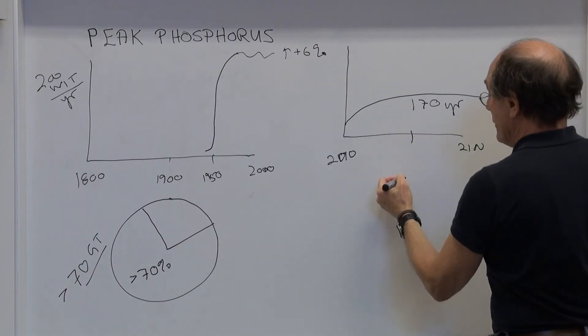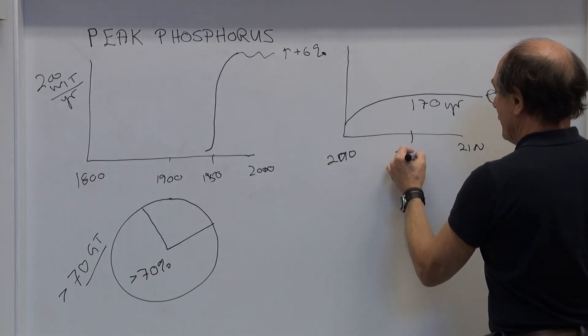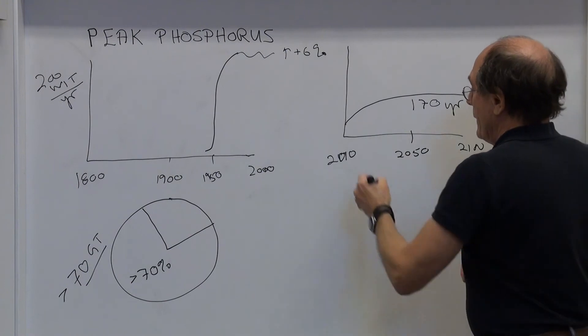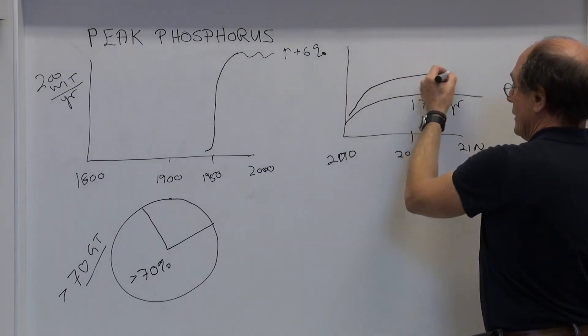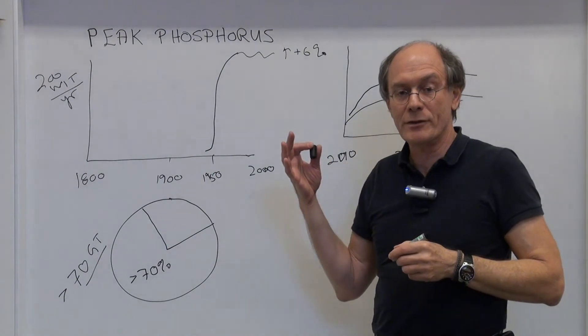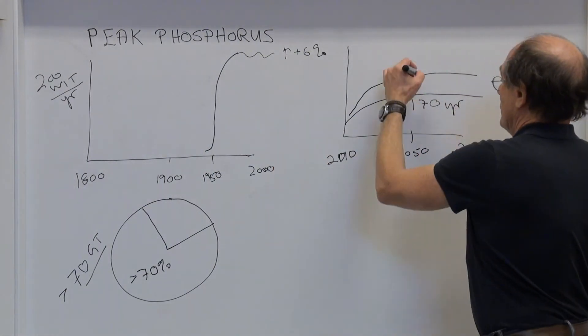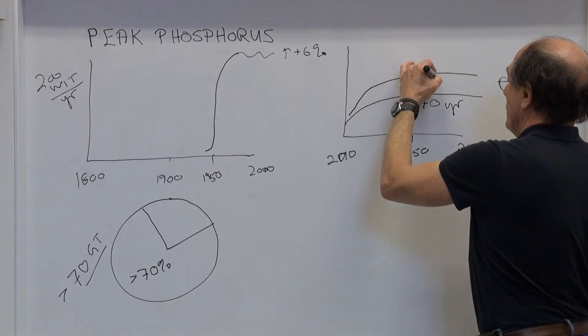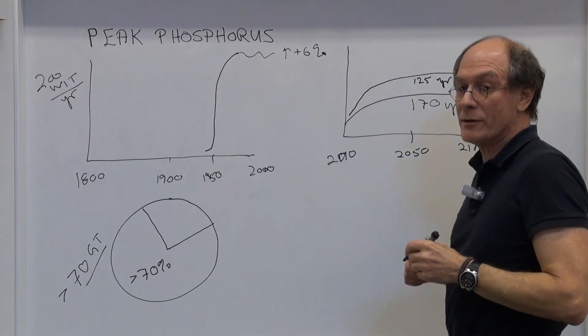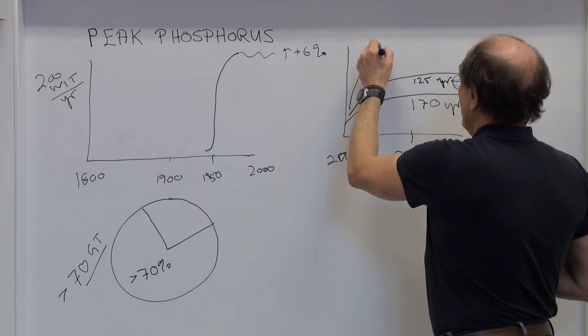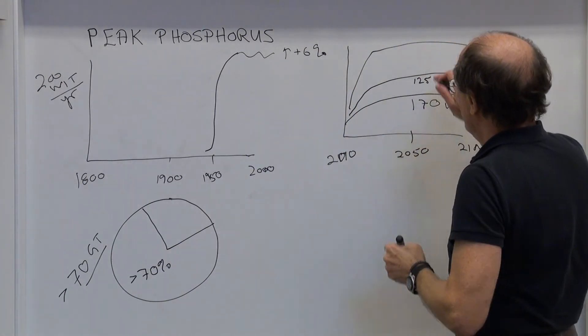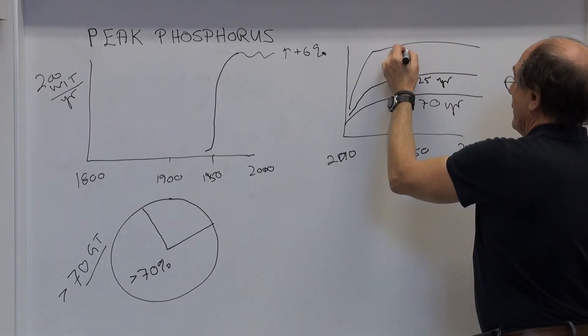And the peak when we have 9 billion people, that's 2050. But if Africa goes green and they start using the world average for fertilizer for NPK, that means that this target will be reduced to maybe around 125 years. And if we add another factor in the scenario, and that is biofuels,